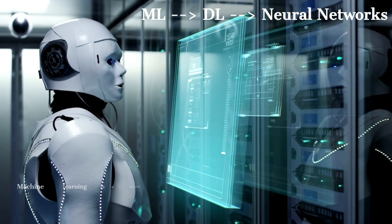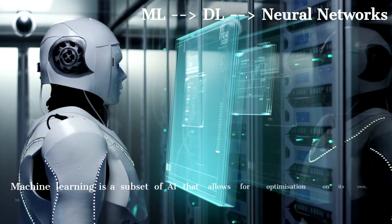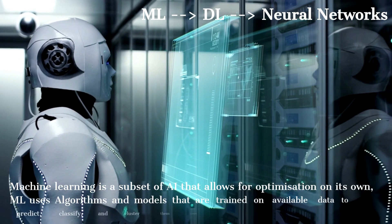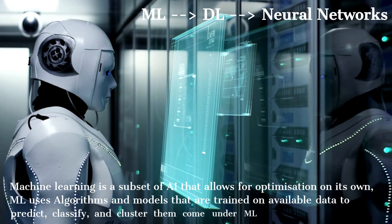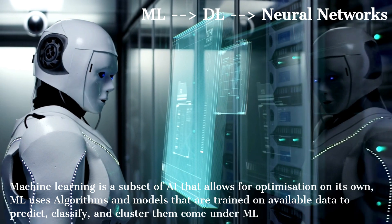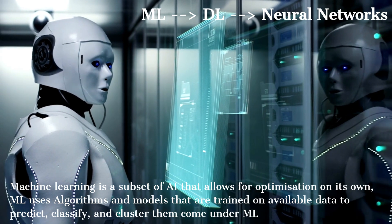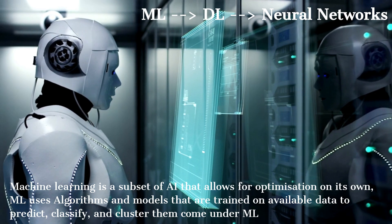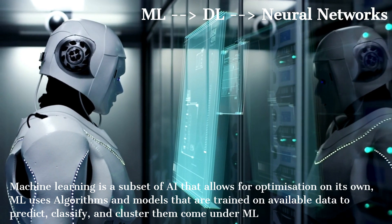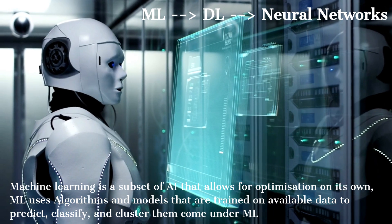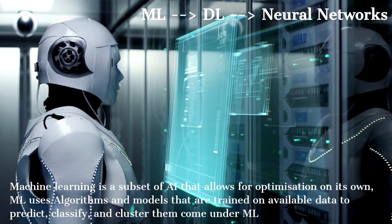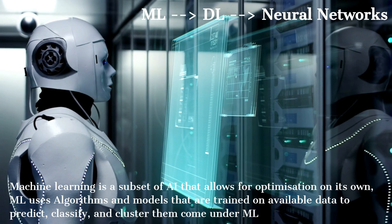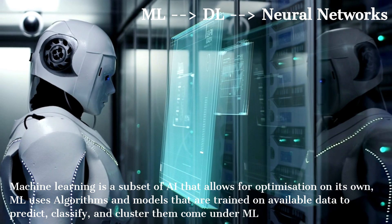Machine learning is a subset of AI that allows for optimization on its own. The word 'learning' means a machine can learn on its own based on past experiences. Like humans use their experiences to make decisions, machine learning does the same but for smaller tasks. Machine learning uses algorithms and models that are trained on available data to predict, classify, and cluster.